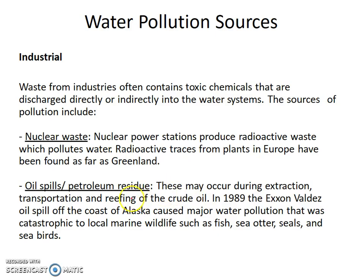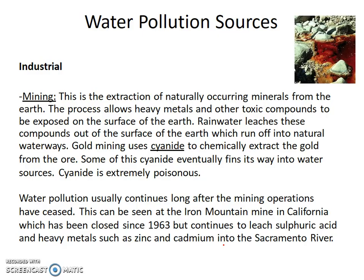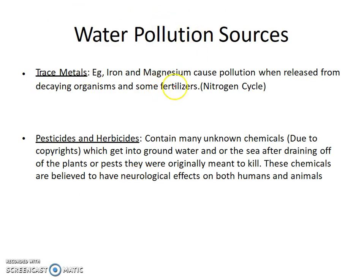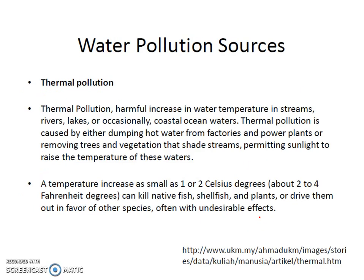Industrial pollutants can include things like nuclear waste — an example is the Chernobyl disaster — and oil spills, like the Exxon Valdez disaster. Lead is an issue and can cause brain damage. Mercury can have toxic effects and is associated with bioaccumulation. Mining also uses things like cyanide, which is poisonous. Trace metals can also cause pollution; they're found in small amounts in organic materials, but when plants and organisms die, they release them. Suspended matter refers to things that don't dissolve but cloud the water.